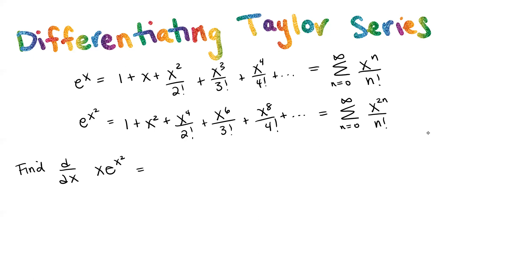Writing this in summation notation is the same exact idea — we're just replacing all of the x's with x squared. So we have almost the exact same summation, but instead of an x we've got x squared. That's our Taylor series for e to the x squared.